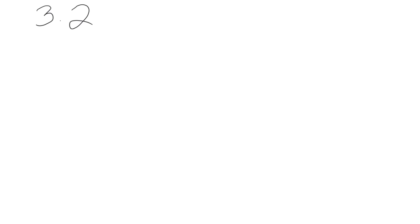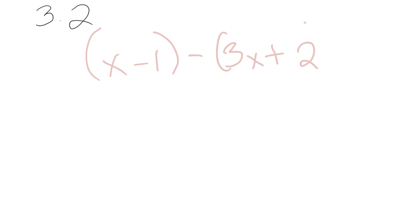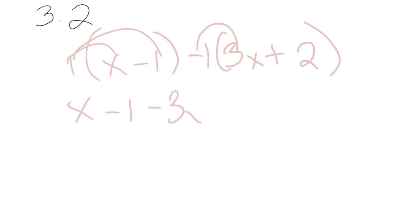Now let's say we had one where we need to do some subtraction. So let's say we had (x minus 1) minus (3x plus 2). In order to subtract, you need to get rid of the parentheses, so we distribute the negative 1. We'd have x minus 1, and then negative 1 times 3x gives you negative 3x, and negative 1 times positive 2 gives you negative 2. Now we can combine our terms: x minus 3x gives us negative 2x, and negative 1 minus 2 gives us negative 3.